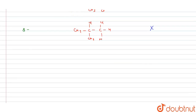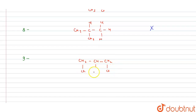The last isomer is CH2Cl-CHCl-CH2-CH3. Is this a meso compound? No, because there is no plane of symmetry, and there is only one chiral center. The CH2Cl carbon is not chiral since it has two hydrogens attached. So this is also not a meso compound.